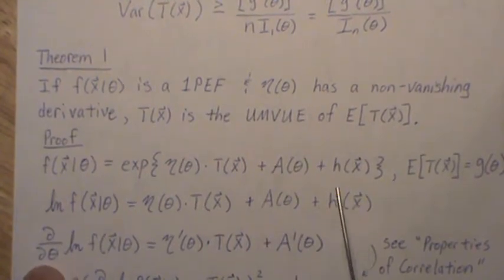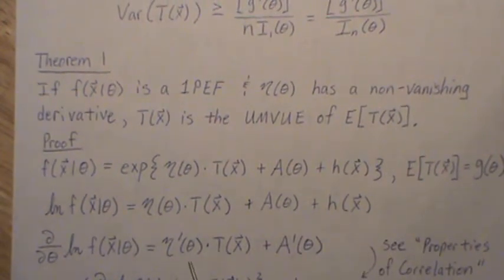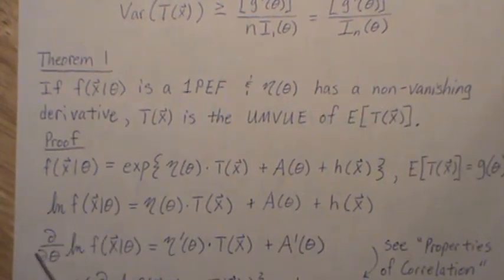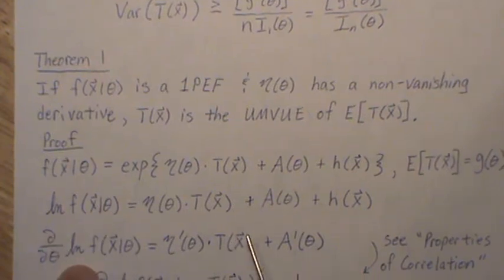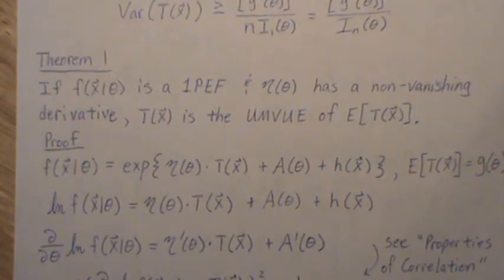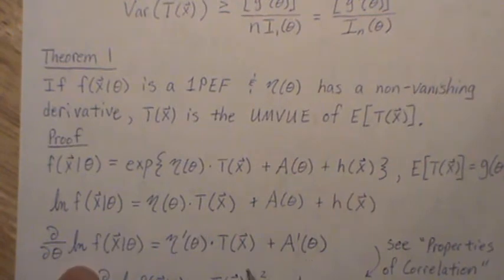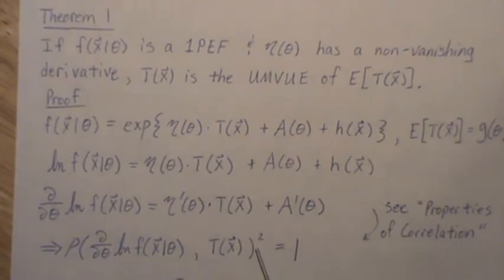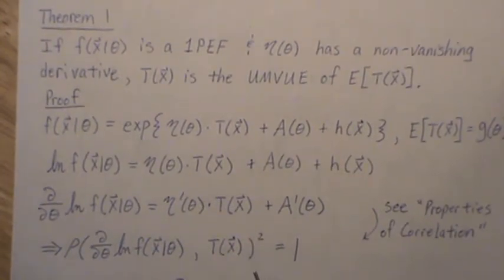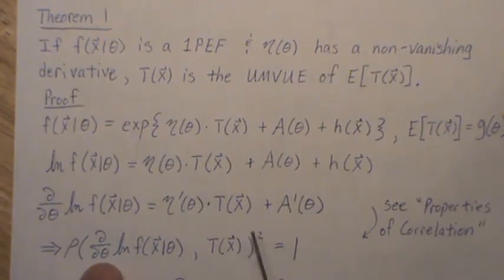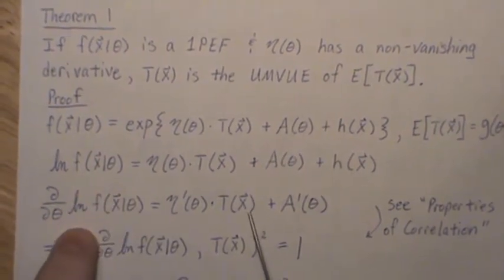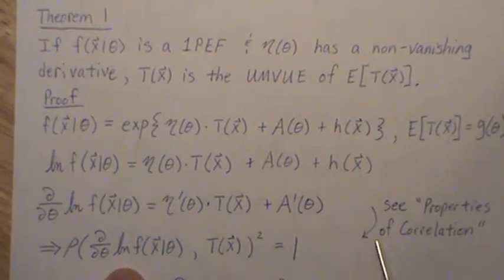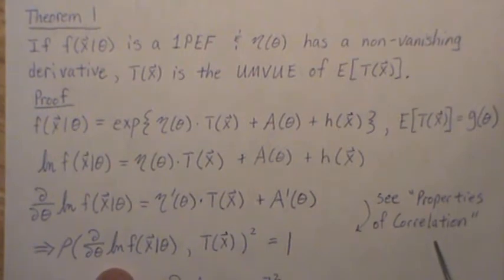H of x is constant in regards to theta, so it goes away. Notice that this random variable and this random variable are exactly linear — this is the slope and this is the y-intercept. If two variables are perfectly linear, then they have a correlation of either 1 or minus 1, called perfect correlation. So if we square the correlation between these two variables, it equals 1. I'll pass you off to a video called Properties of Correlation where we prove this.